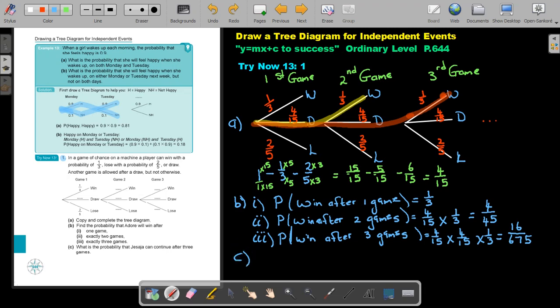And then number C, the final one. What is the probability that Isaiah can continue after three games? Now when will he continue? Let's just mark that road. He can only continue if he draw, draw, draw. And then he will continue. We can just write it, the probability that continue after three games. That's going to be 4 over 15 multiply 4 over 15 multiply 4 over 15. And the final answer is going to be 64 over 3375. That's going to be the final answer.